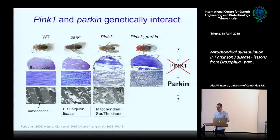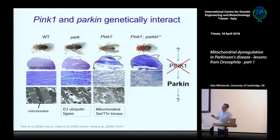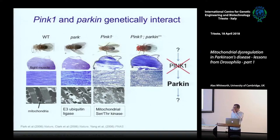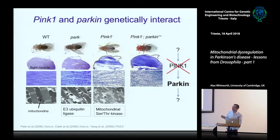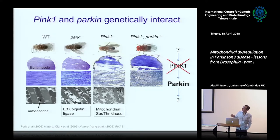These genetic studies are tremendously powerful, but they don't tell you anything else about what composes the pathway or what the pathway is actually doing. It was already known that Parkin is an E3 ubiquitin ligase, and that PINK1 is clearly a mitochondria-targeted serine-threonine kinase.